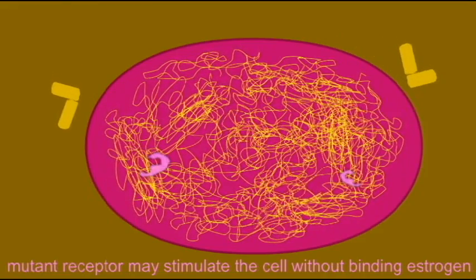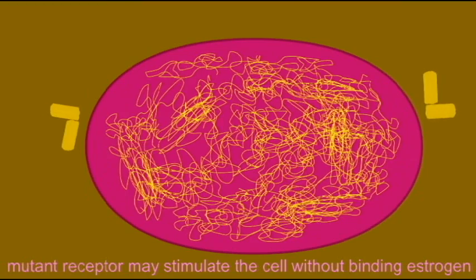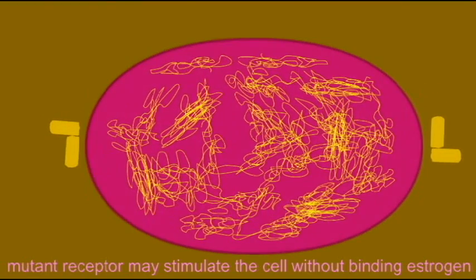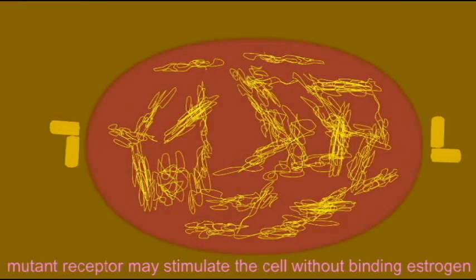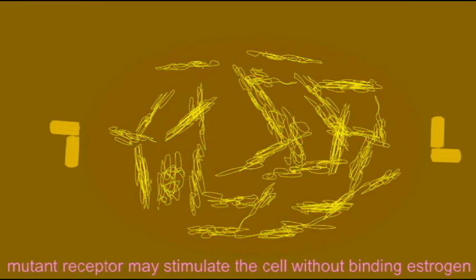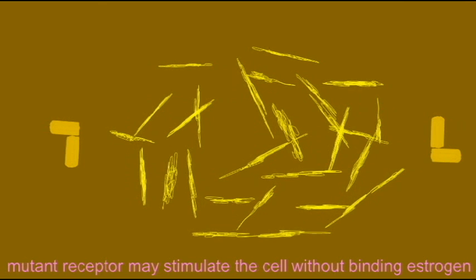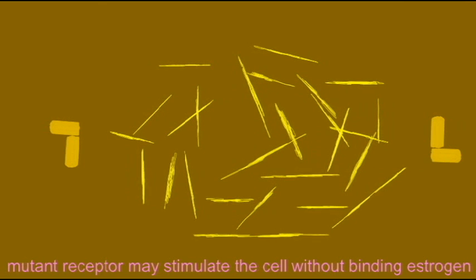Usually estrogen receptors are only activated and only turn on genes when they have bound the hormone estrogen. But certain mutant receptors have the ability to bind DNA and turn on genes even when they have not bound estrogen, and so they may continually tell cells to divide even when estrogen is absent.